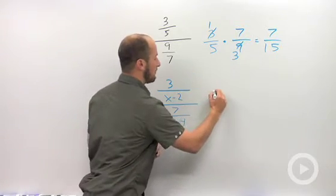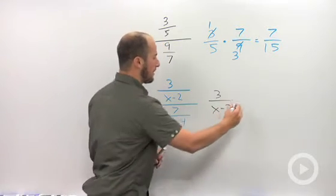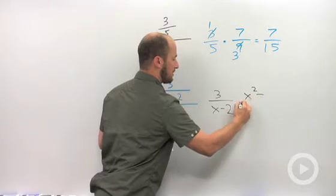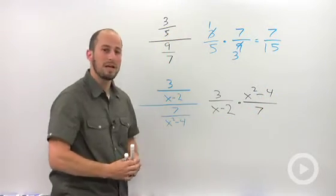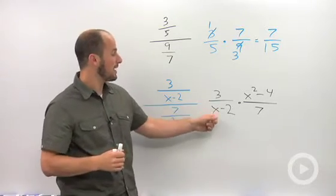The numerator stays the same, 3 over x minus 2. The denominator gets flipped and turns into multiplication, x minus 4 over 7. So this particular expression, we can actually cancel out x minus 2.